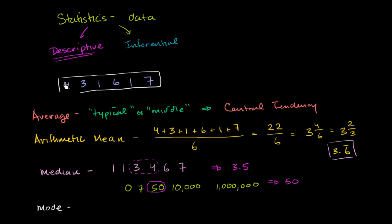Well, we only have one 4. We only have one 3. But we have two 1's. We have one 6 and one 7. So the number that shows up the most number of times here is our 1. So the mode, the most typical number, the most common number here is a 1. So you see,